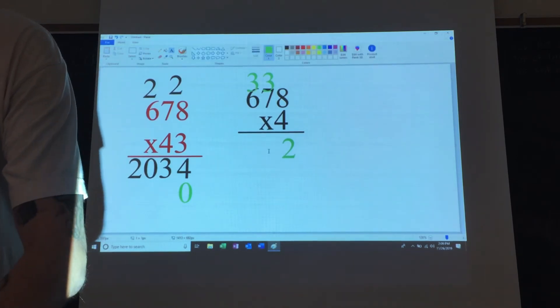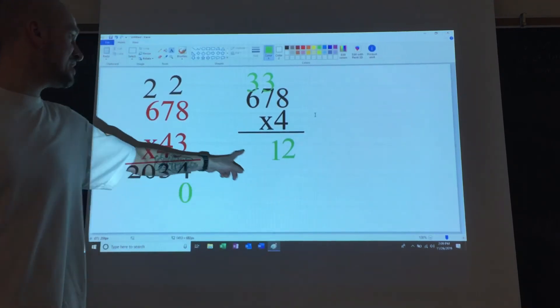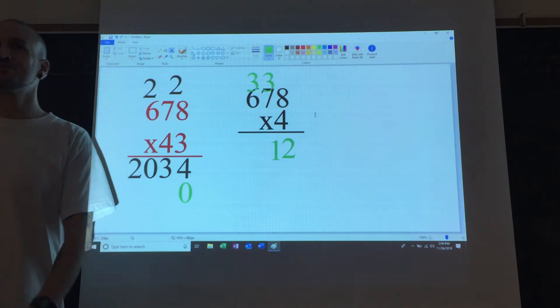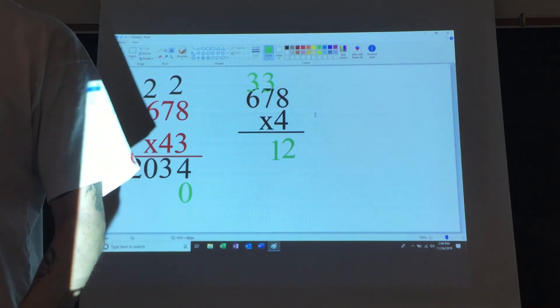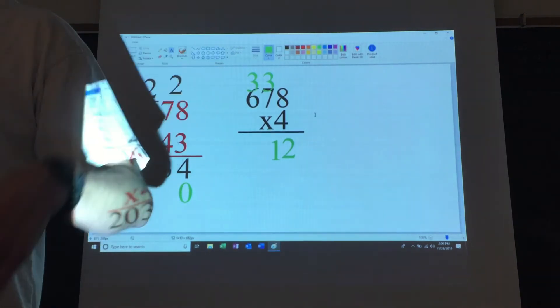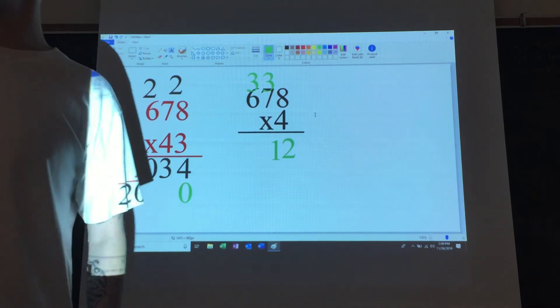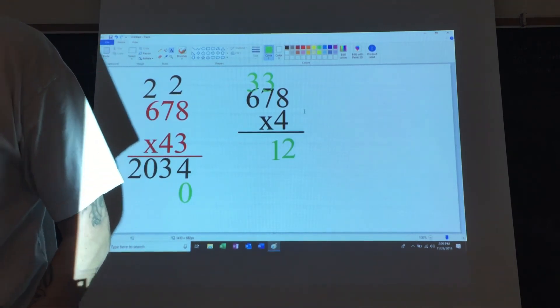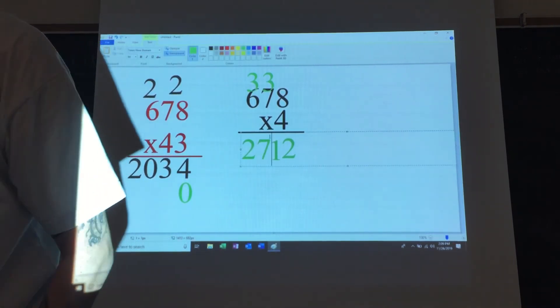4 times 6 is what? What's 6 times 4? Yeah, 24 plus the 3 equals yes, 27. So we put a 2 here, a 7 here.